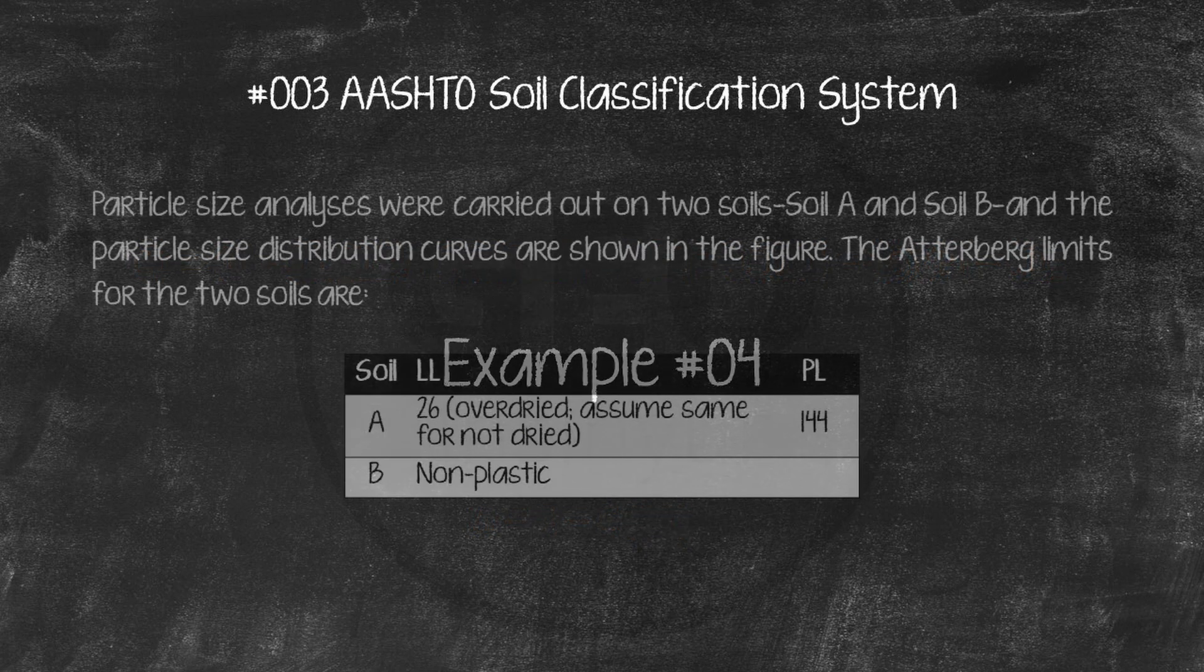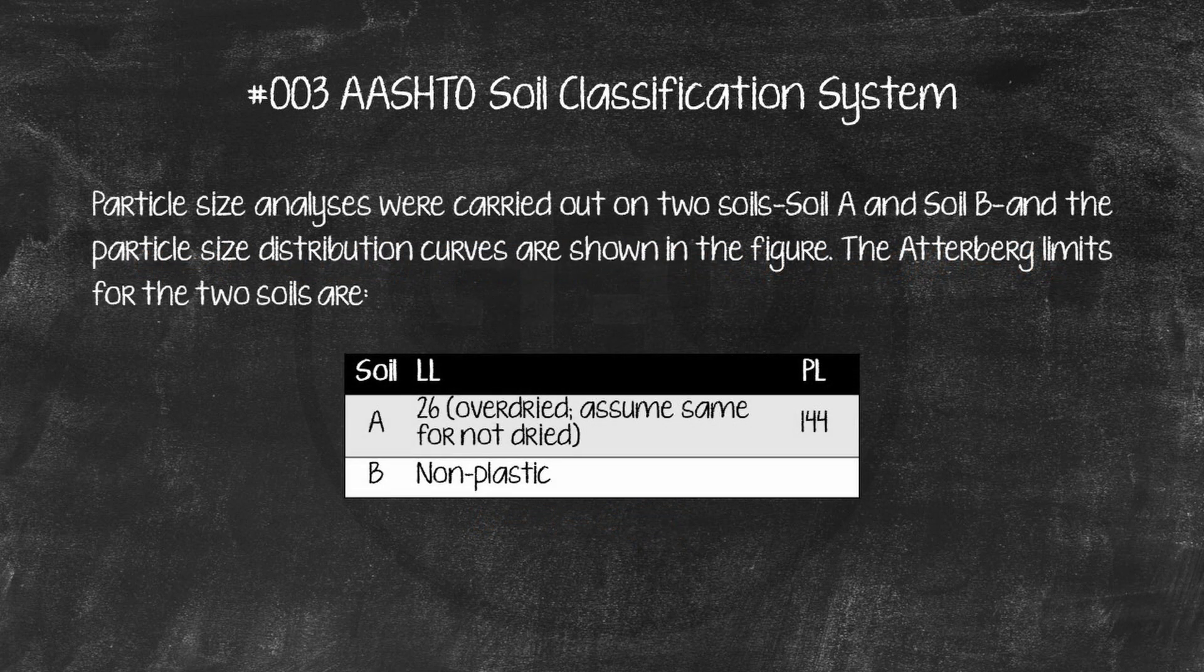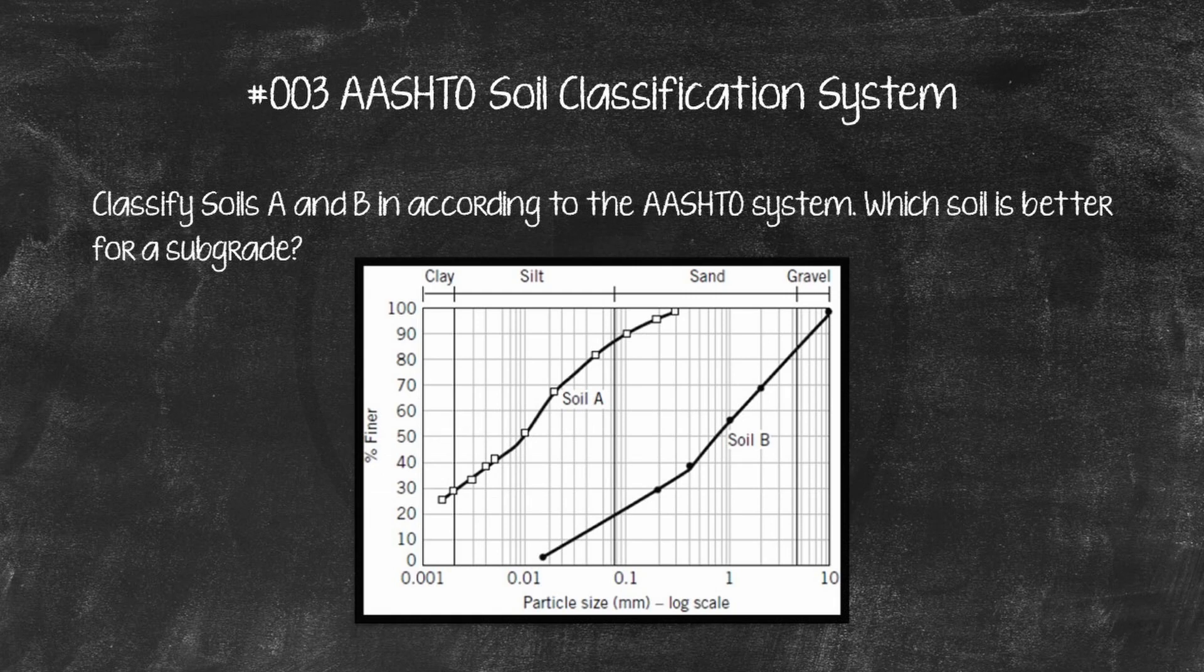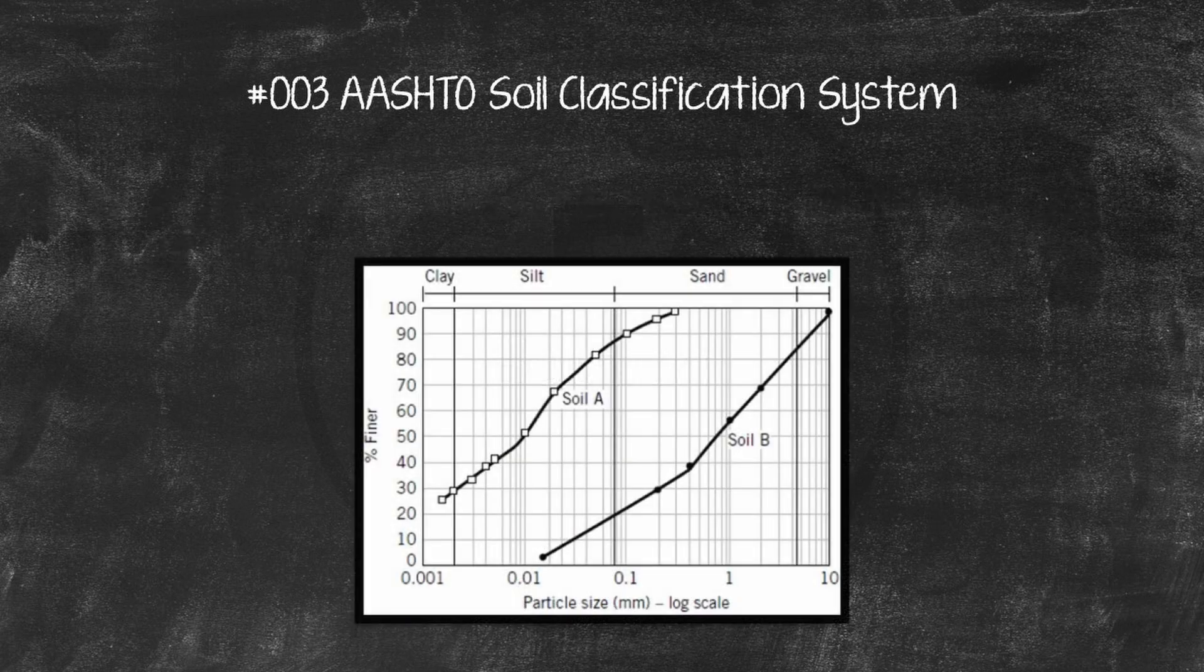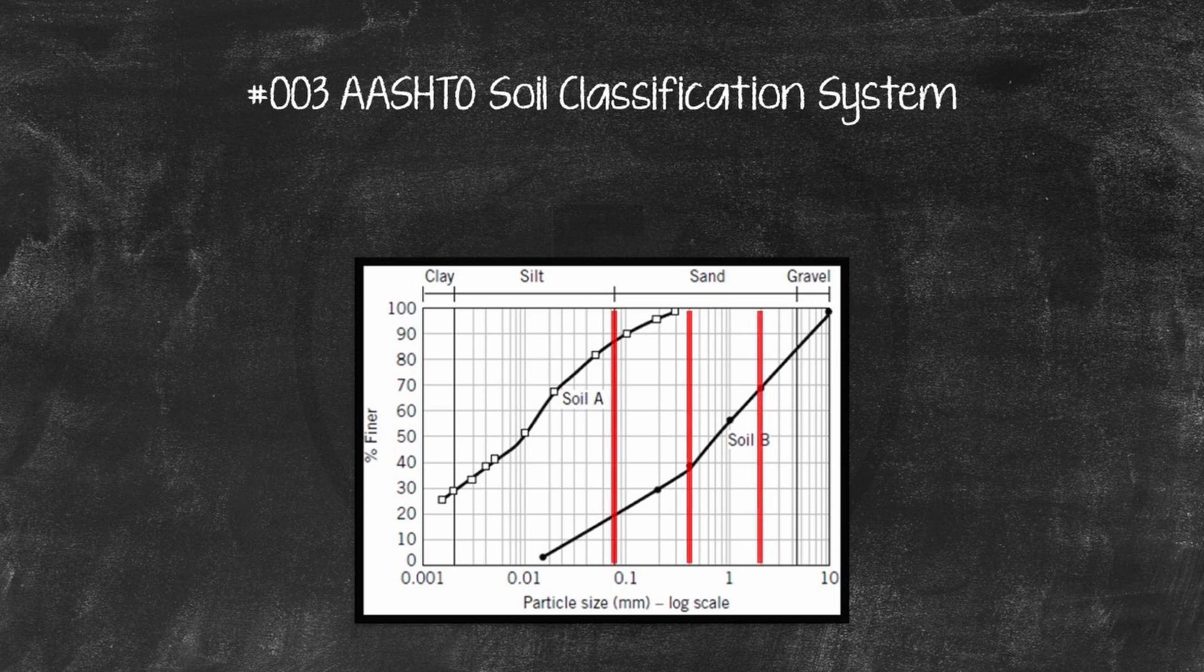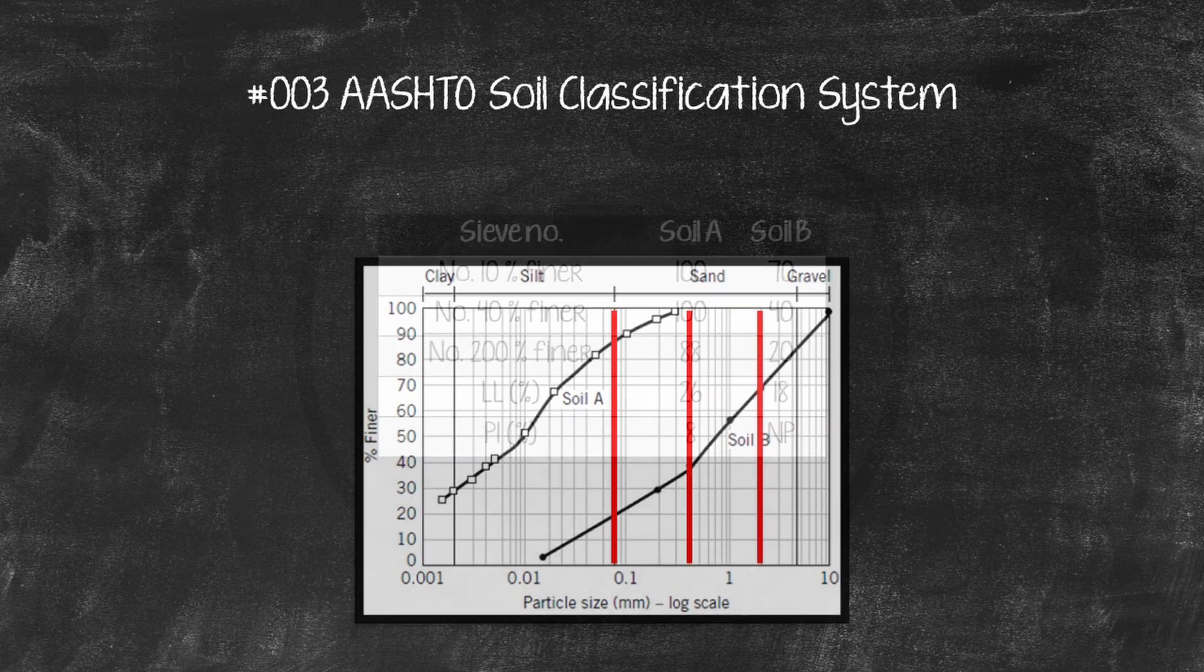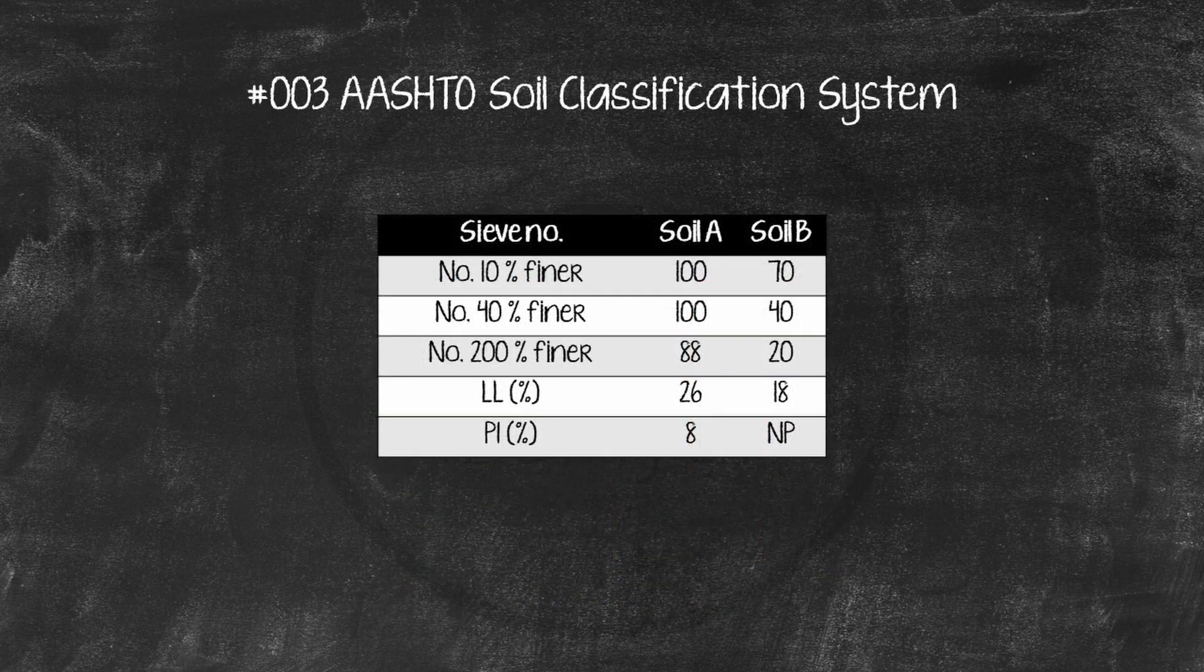Example number 4. Particle size analyses were carried out on two soils, soil A and soil B, and the particle size distribution curves are shown in the figure. The Atterberg limits for the two soils are in this table. Classify soils A and B according to the Ashto system. Which soil is better for a subgrade? Solution. Determine percent passing number 10, number 40, and number 200 sieve. Make a table of values according to Ashto table.